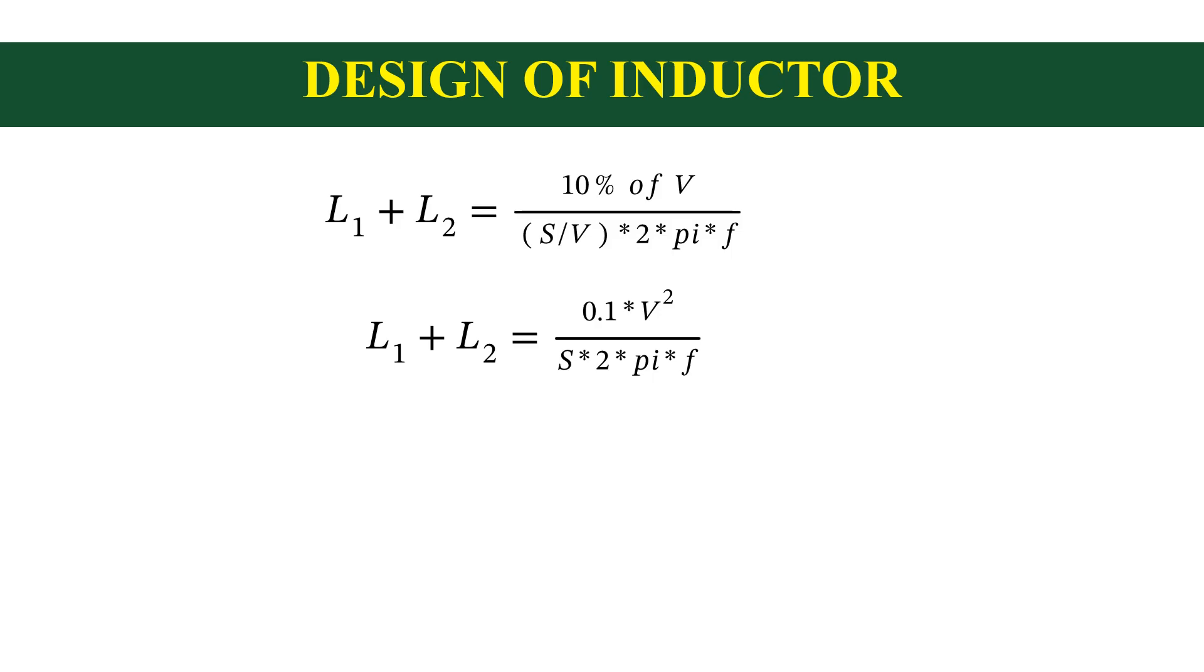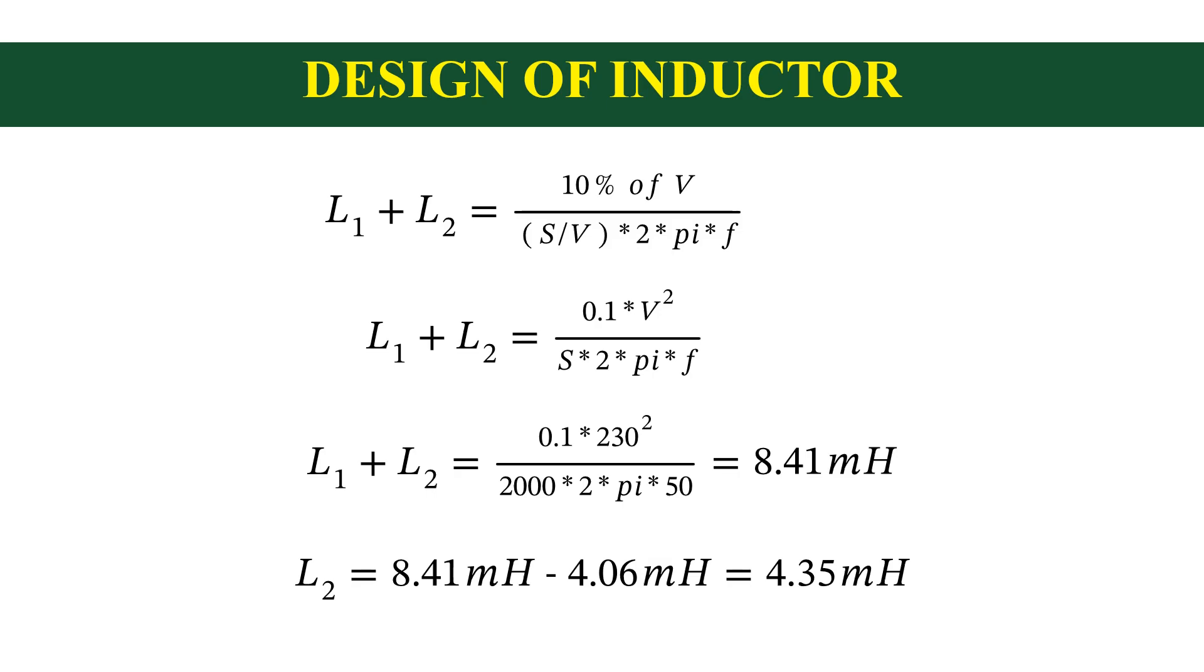Now substitute values from the specification, we will get 8.41 millihenry as L1 plus L2. Therefore L2 is equal to 8.41 minus 4.06, that is 4.35 millihenry.